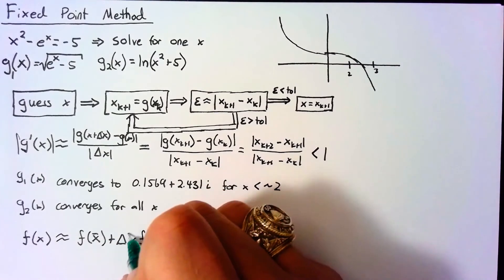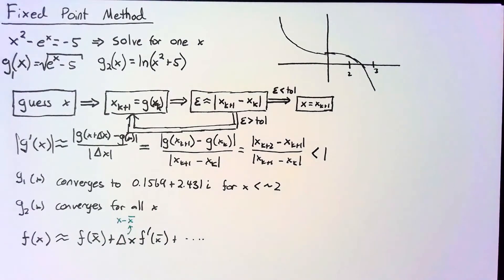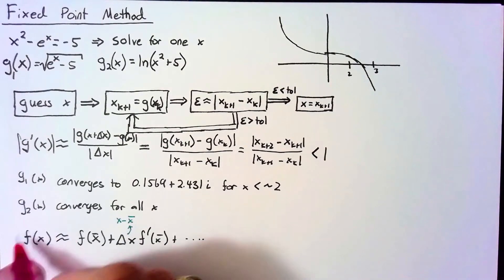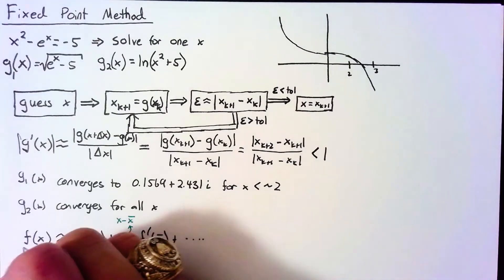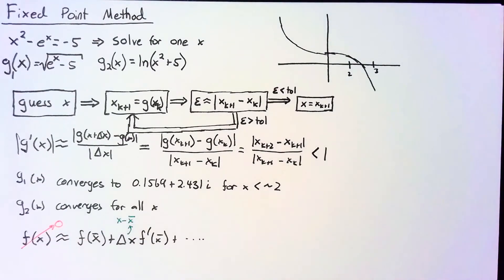Now this Δx is just x - x̄. So if we write this out, and we know that we're trying to find is the location of x where f(x) = 0. So we're actually going to set this term equal to 0 and then solve for this value of x.